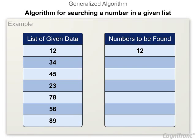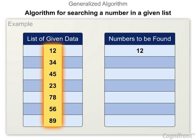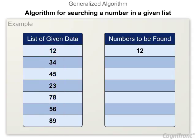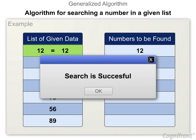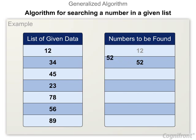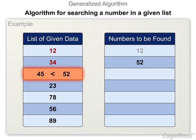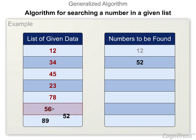Now let us study an algorithm for searching a number in a given list. Step 1: Arrange the given data in array format. Step 2: Compare the given number with the first number in the array. Step 3: If the numbers are equal, then stop the searching operation and show the message 'search is successful.' Step 4: Otherwise, compare the number with the second, third, and so on until the end of the array. For each array index, repeat step 3.